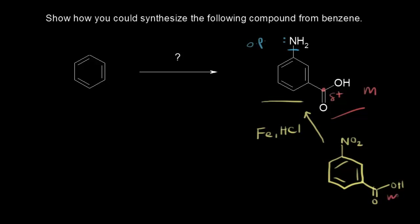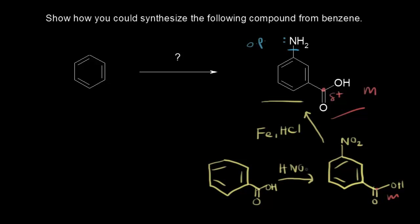We have a meta director — the carboxylic acid — so if I take that nitro group off, I can come up with the precursor to this molecule, which would be just benzoic acid. The reagents necessary for a nitration reaction would be concentrated nitric acid and concentrated sulfuric acid. Because my carbonyl on the carboxylic acid is meta directing, the nitro group ends up in the meta position.